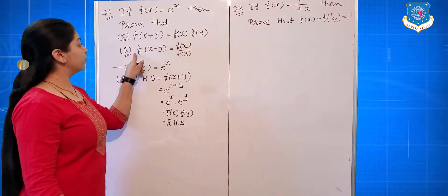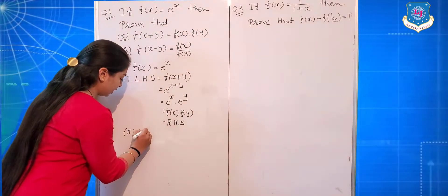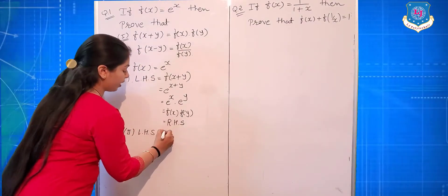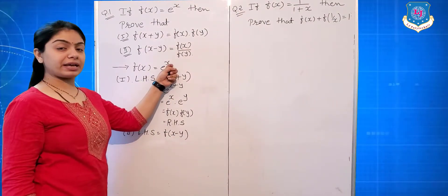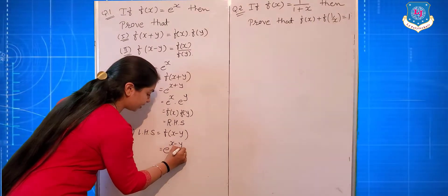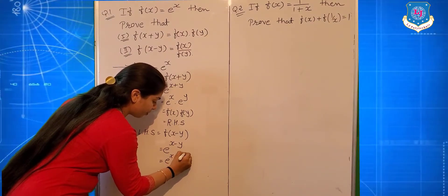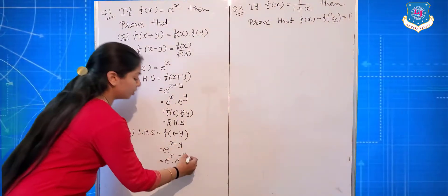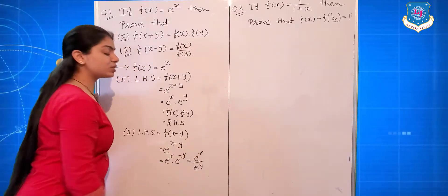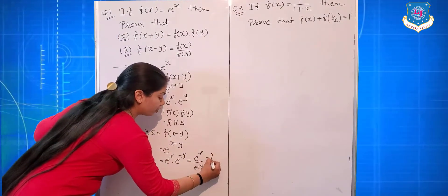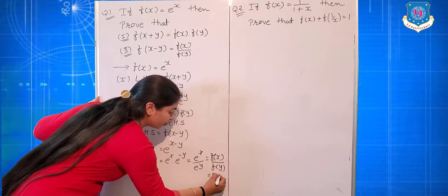Similarly, we prove the second part. LHS is f(x−y). Replace x with x−y, so that equals e raised to (x−y), which equals e raised to x into e raised to minus y. This is evaluated as e raised to x upon e raised to y — that is f(x) upon f(y) — and that equals RHS.